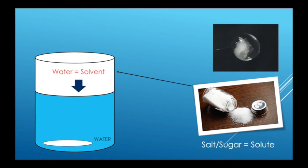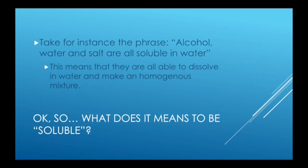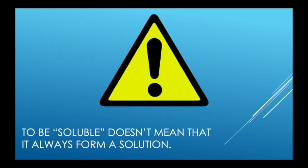So looking at our ingredients, water will be the solvent. The salt or sugar will be the solute, and the mixture between water and sugar or salt will be known as the solution. It is said that both salt and sugar are soluble in water. So a fair question will be, what does it mean to be soluble? This is very simple. Take, for instance, the phrase: alcohol and water and salt are all soluble in water. This means that they are all able to dissolve in water and make a homogeneous mixture. You need to be careful; not always being soluble means that you'll form a solution.